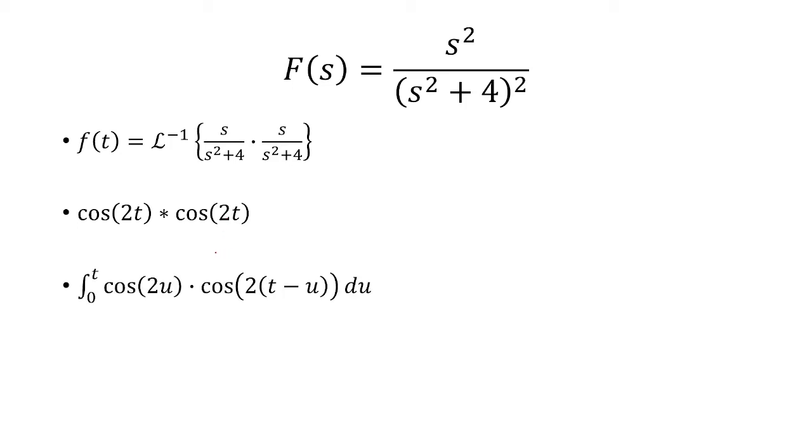Now using the integral formula, we have the integral from 0 to t, cosine 2u times cosine of 2 times t minus u du. I'm going to multiply by 1 half and 2. I could do that because 1 half times 2 is 1, and I'm not changing the value of this.